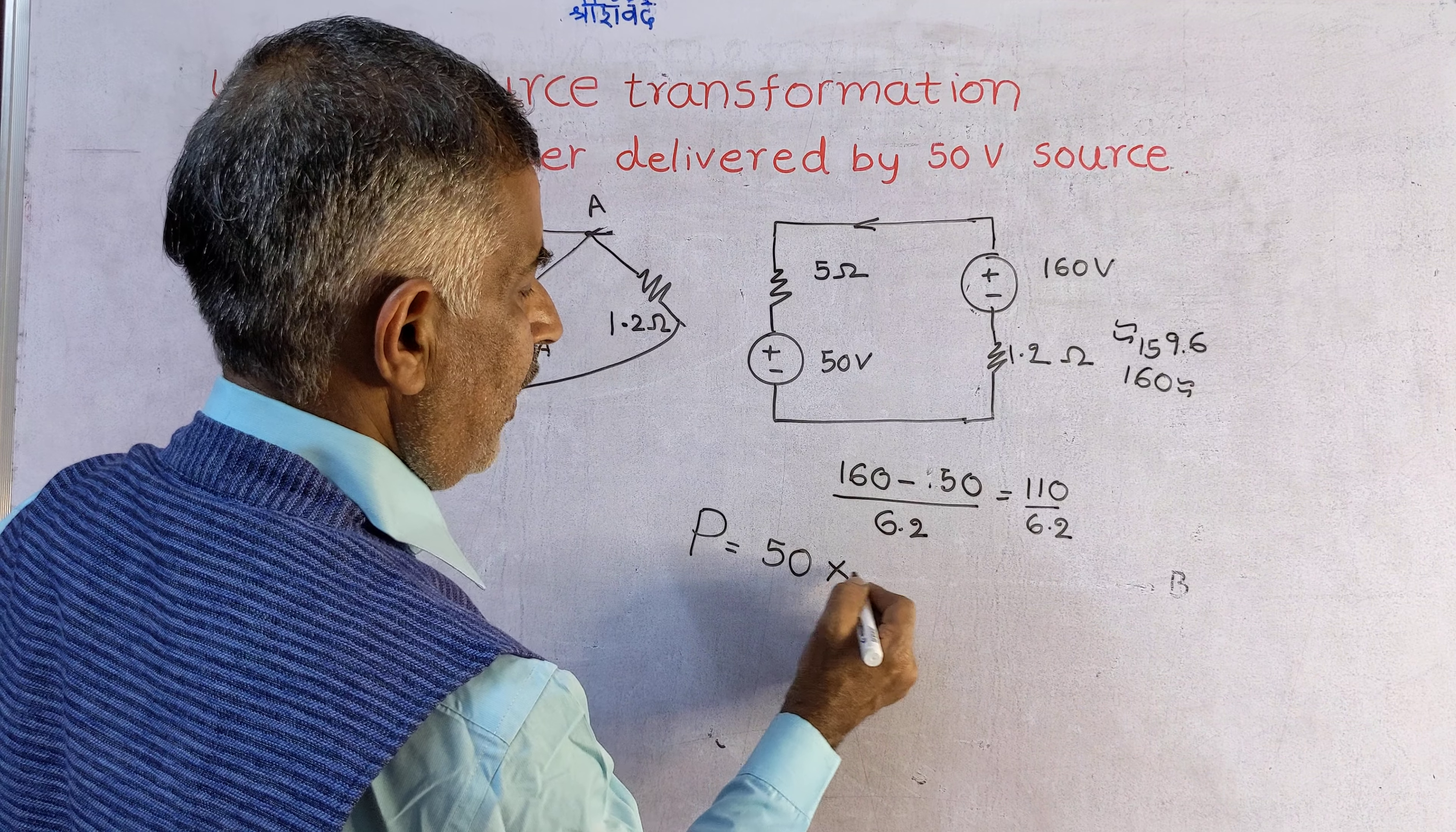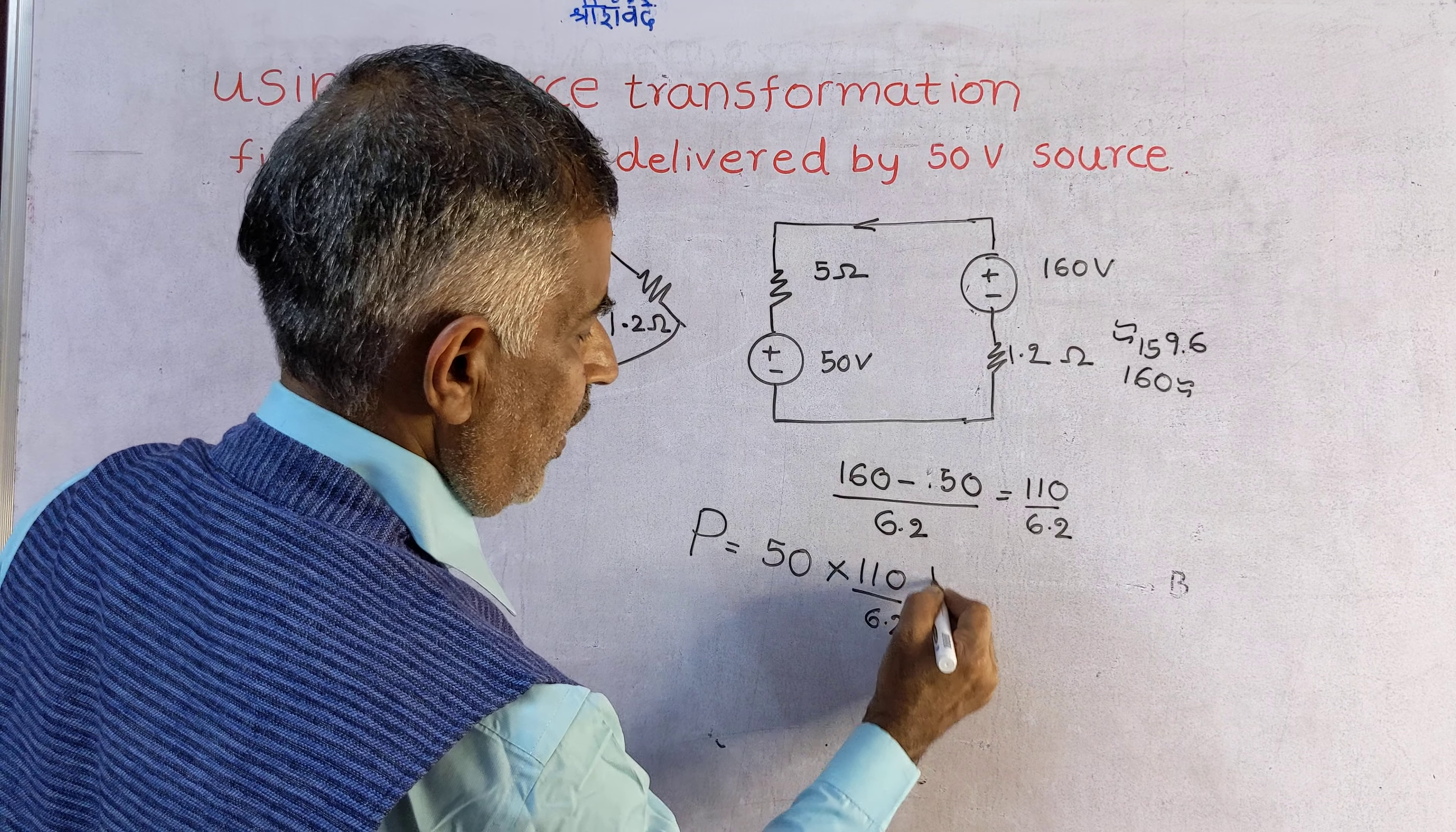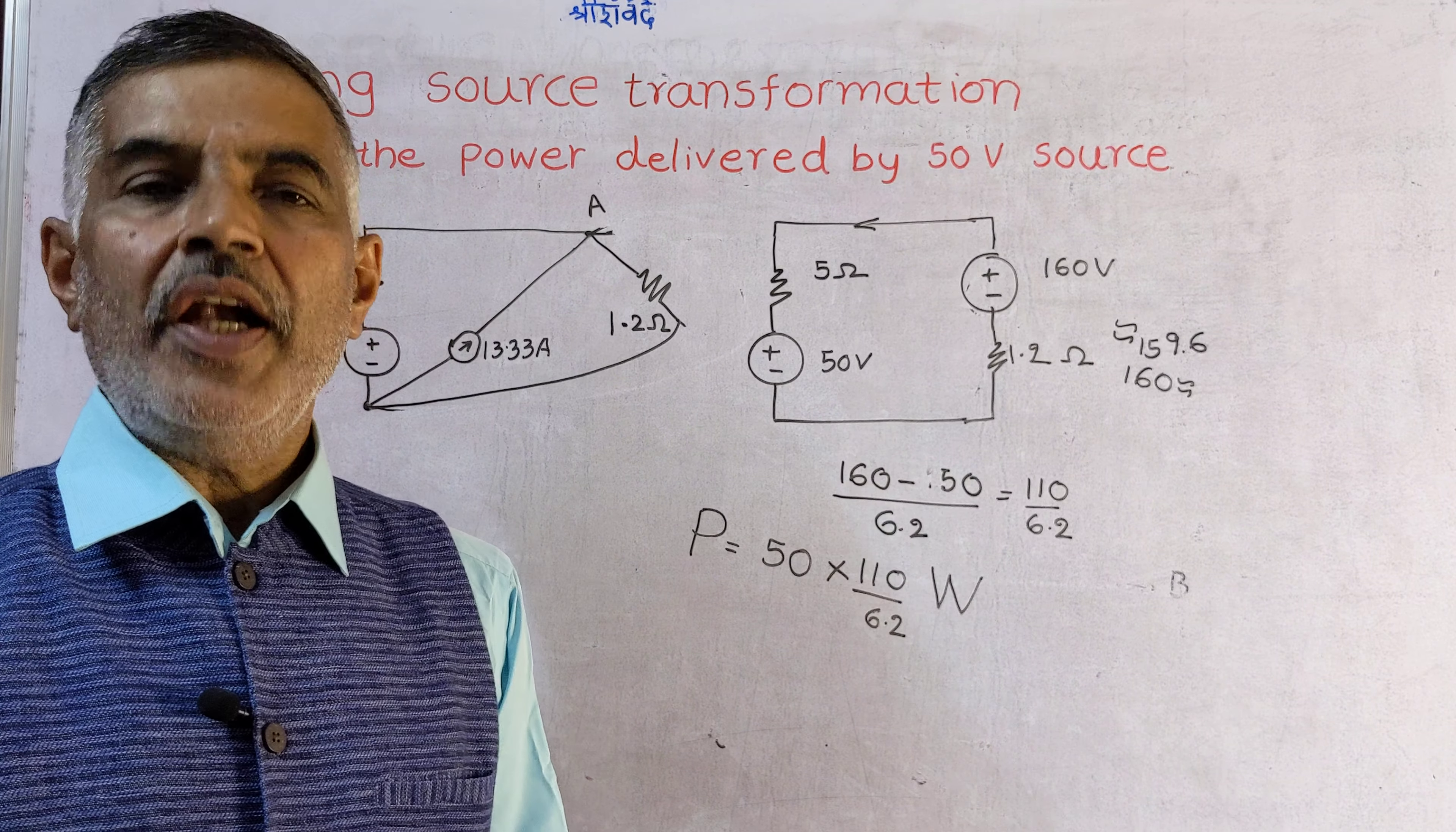Power absorbed by 50 volt source is 50 multiplied by current. So this is how you have to work out problems on source shifting and source transformation.